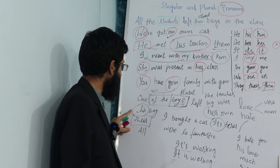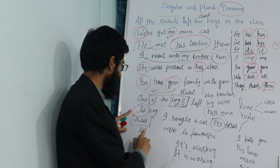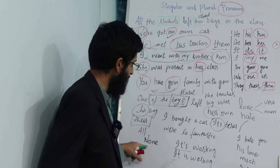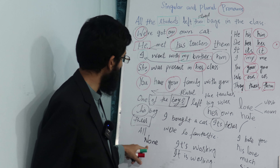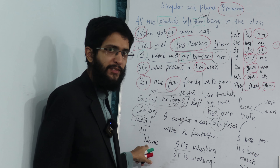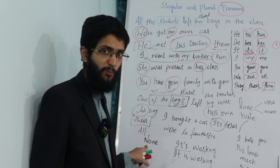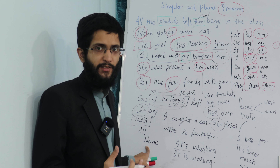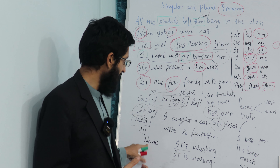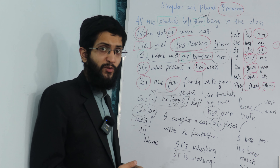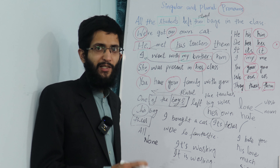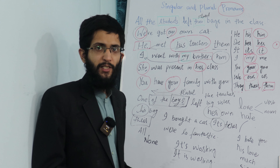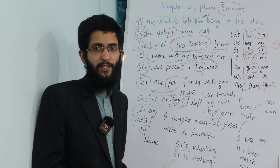The next thing is: if the word were 'none' — 'none of the boys' — the same rule applies. 'None of the boys left his bag.' This is a singular state of sentence. 'None of the boys,' and even 'neither of the boys' — like out of two — 'neither of the boys left his bag in the class.'